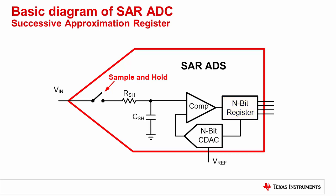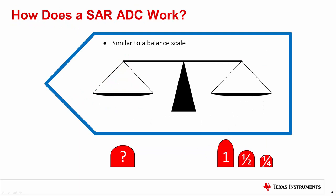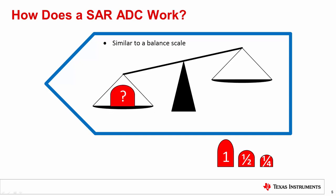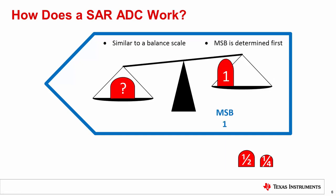Let's consider an analogy to help clarify the SAR operation. Consider the SAR to be like a balanced weight scale, where the input voltage is an unknown weight. On the right side, we have several calibrated counterbalance weights scaled in binary. Since we have three counterweights, this essentially represents a 3-bit converter. The first step is to apply the unknown weight to the left-hand side of the scale — analogous to the sampling, or acquisition, period of a SAR ADC. Next, we begin adding the calibrated counterbalance weights starting with the heaviest, which is analogous to testing the most significant bit, or MSB, in a conversion.